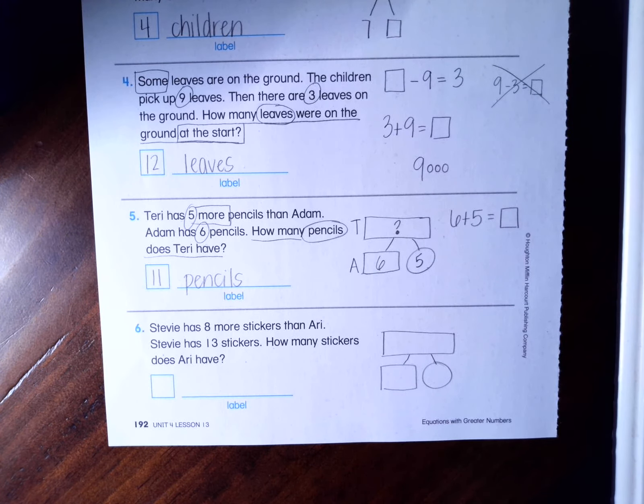Okay. I encourage you to try number six on your own. See if you can fill in those comparison bars. It says Stevie has eight more stickers than Ari. Stevie has 13 stickers. How many stickers does Ari have? So try and fill in those comparison bars. Pause the video.